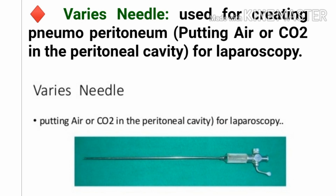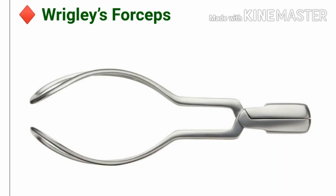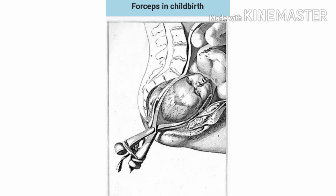This is the image of Wrigley's forcep. It is used in low or outlet deliveries. With the help of this figure you can see very clearly how Wrigley's forcep is used in childbirth.